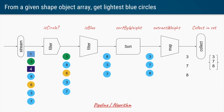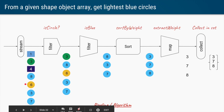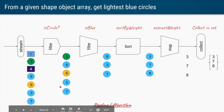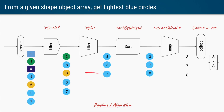Object streams work in a similar manner. Say we have a stream of shape objects — squares and circles — with a color and a weight. We call filter to allow only circles through, blocking all squares. We apply another filter to allow only blue circles. We sort by weight to reorder the stream. Then we map to extract the weight, giving a stream of numbers, and finally collect into a set as the output — a complete elegant pipeline.